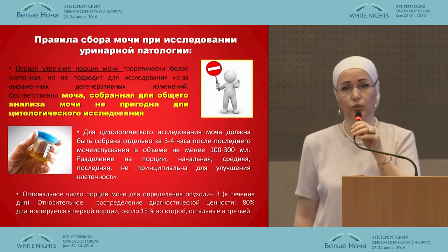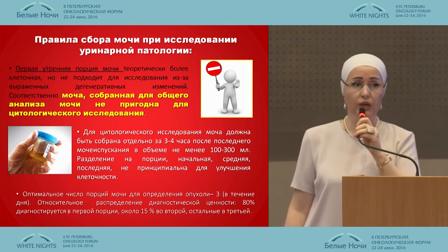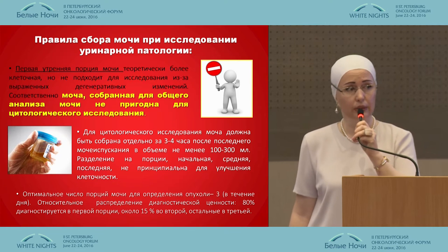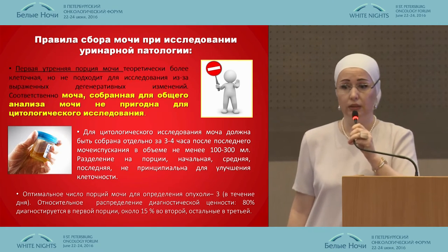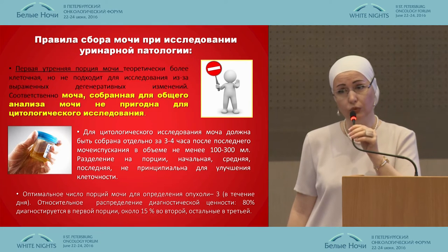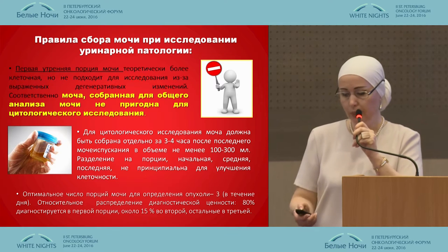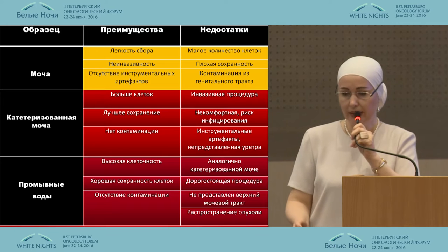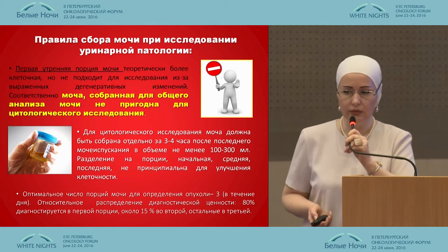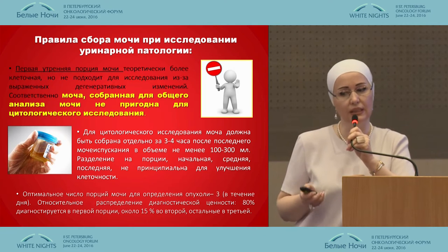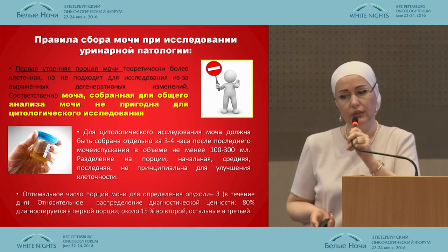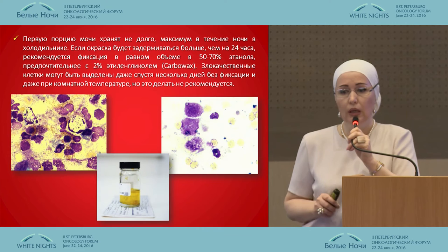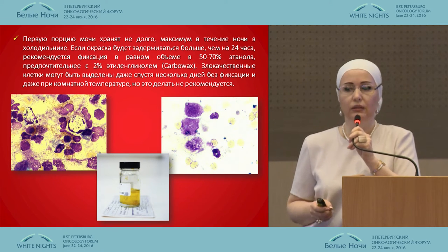There are certain rules for collecting the urine. In lab diagnostics, each doctor knows how to collect urine. However, there are very strict requirements for better collection and analysis of urine cells. We should not deal with the first portion of the urine, because in the first portion there is degeneration of the substance. For cytological research, urine should be collected in a volume of 100–300 milliliters after 3–4 hours from the previous emission.